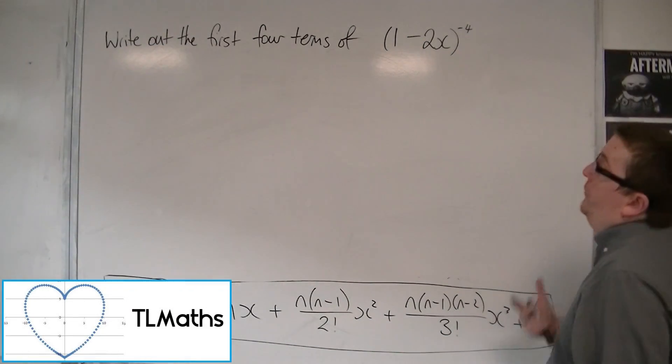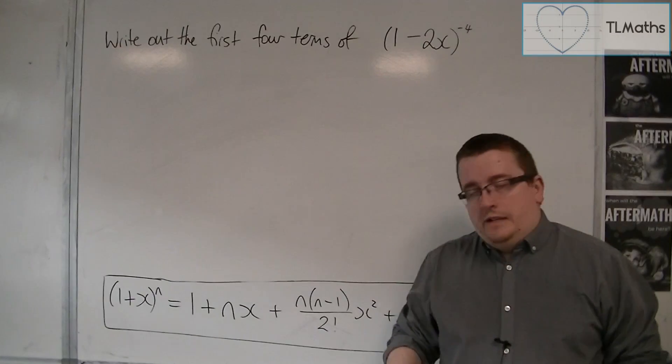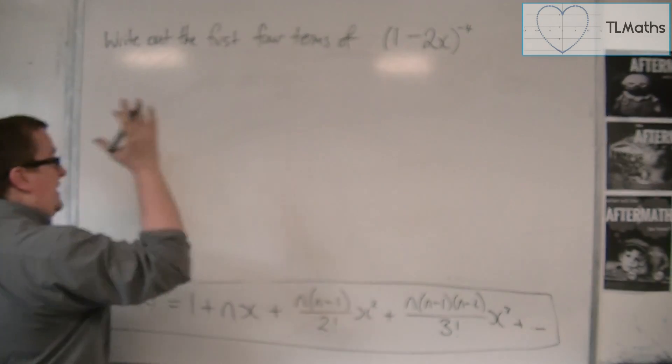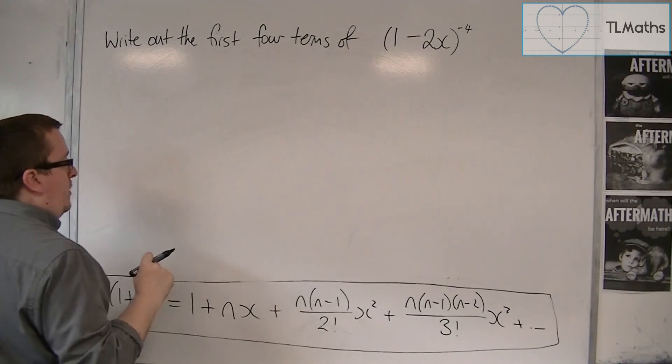Let's say we've been asked to find the first four terms of (1-2x)^(-4). Let's have a go at using this formula. What we have is already in the format of 1 plus or 1 minus something, so we can use the formula straight off.